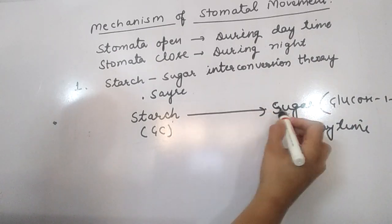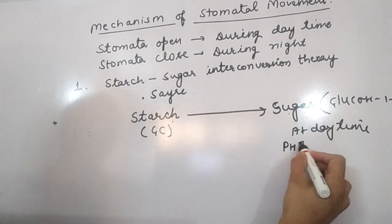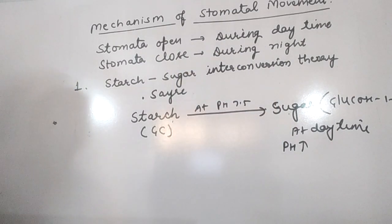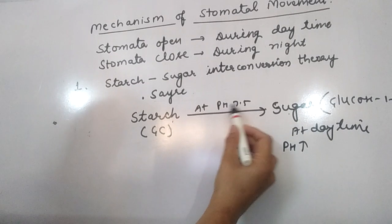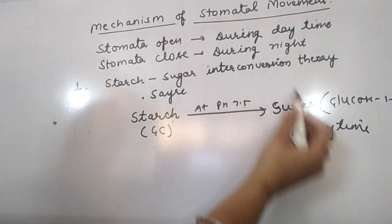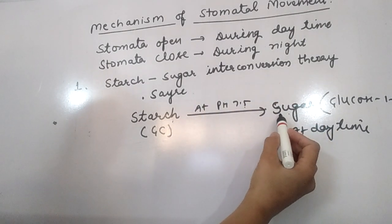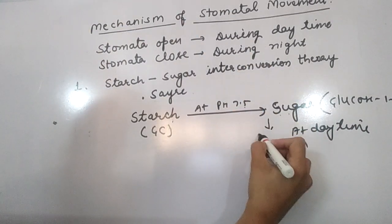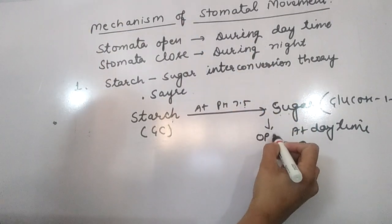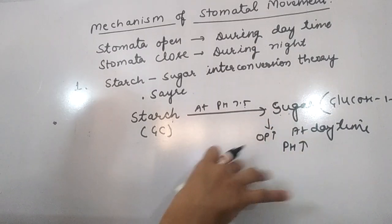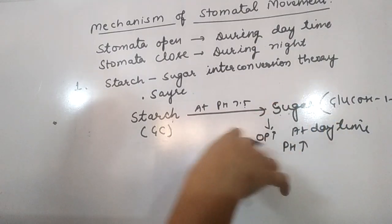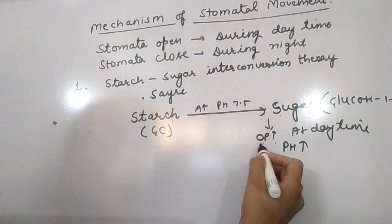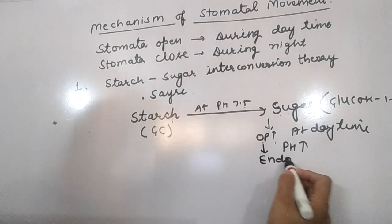At this time the condition is high pH — at pH 7.5, starch is converted into sugar. When sugar is produced in the guard cell, the osmotic pressure is high because solute concentration is high. As a result, endosmosis happens.